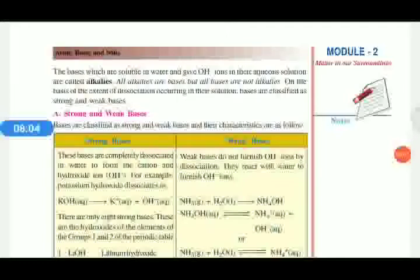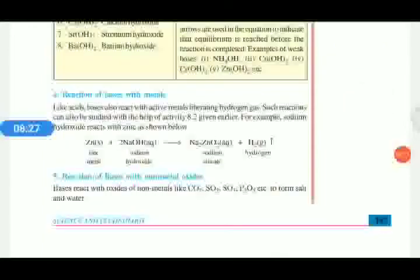In the case of weak bases, they do not furnish OH⁻ ions by dissociation. For example, NH₄OH — when we mix NH₄OH with water we get NH₃ plus H₂O, which means it does not produce OH⁻ ions.